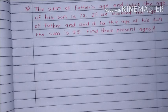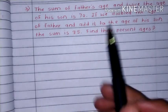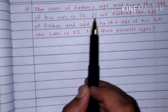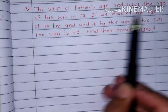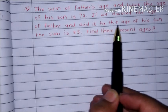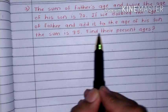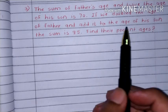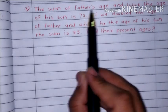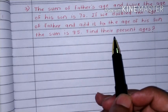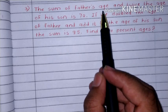Third example: the sum of the father's age and twice the age of his son is 70. If we double the age of the father and add it to the age of his son, the sum is 95. Find their present ages.